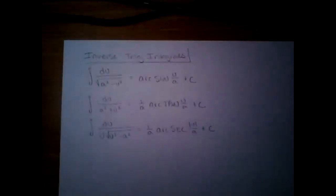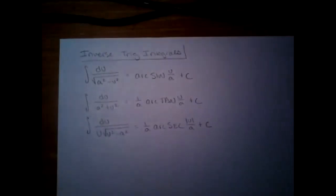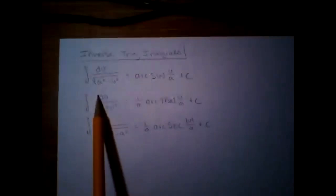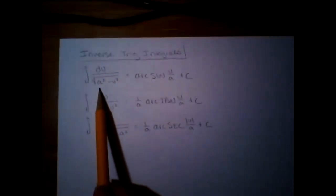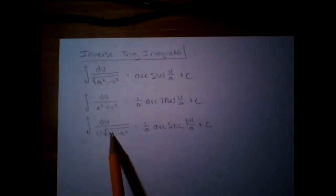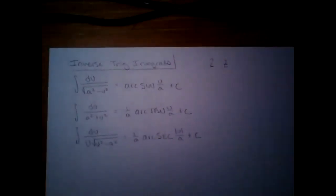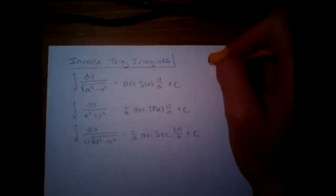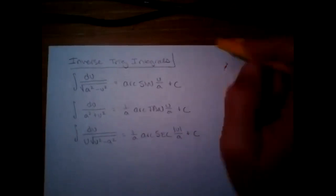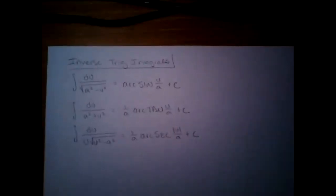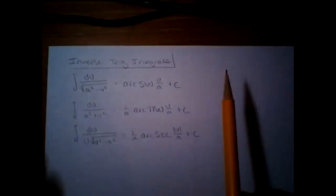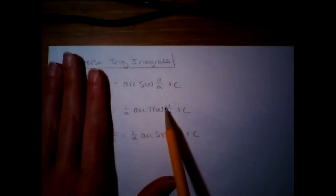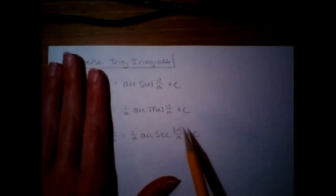The thing with these is you really don't need to memorize the left side of the equal sign — that's just going to happen in the problem. You really just need to be able to identify which one is which. Those are all squared: a squared minus u squared, a squared plus u squared, and u squared minus a squared. If you look at the right sides, they're all really the same: arc sine u over a plus c, arc tangent u over a plus c, and arc secant u over a plus c.